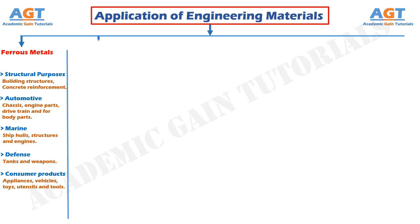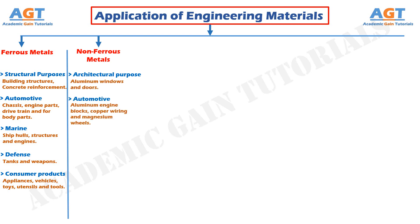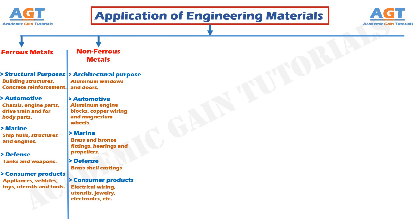Non-ferrous metals are used in architectural purposes for aluminum windows and doors. In automotive, for aluminum engine blocks, copper wiring, and magnesium wheels. In the marine industry, for brass and bronze fittings, bearings, and propellers. In the defense industry, for brass shell castings. And also in consumer products, for electrical wiring, utensils, jewelry, electronics, etc.